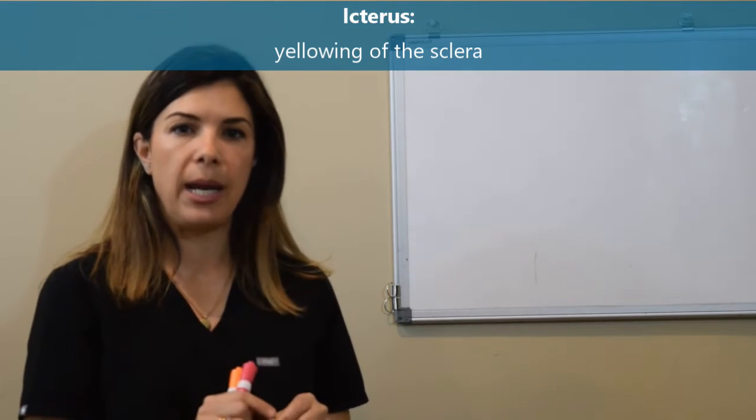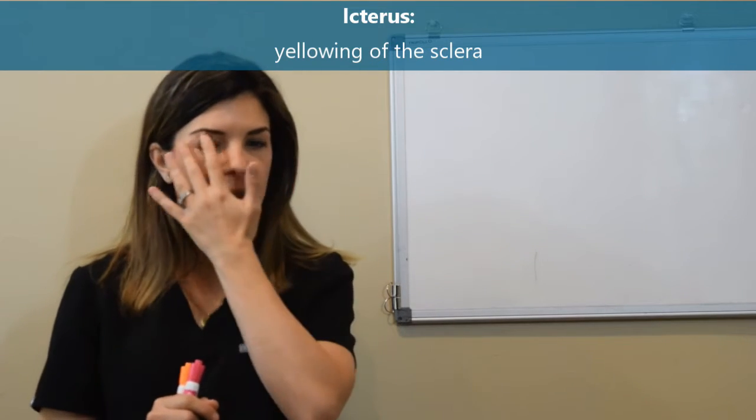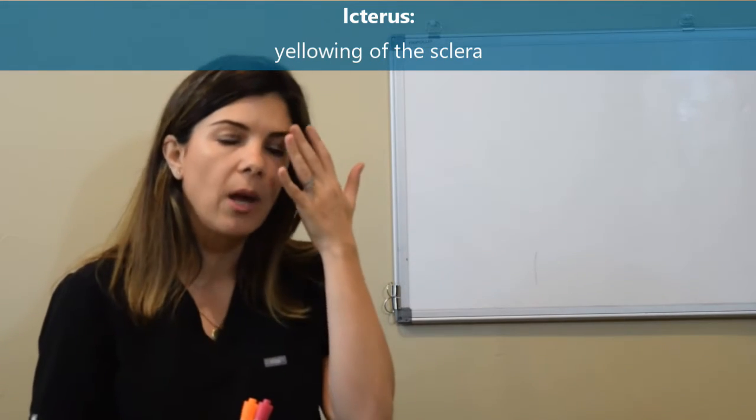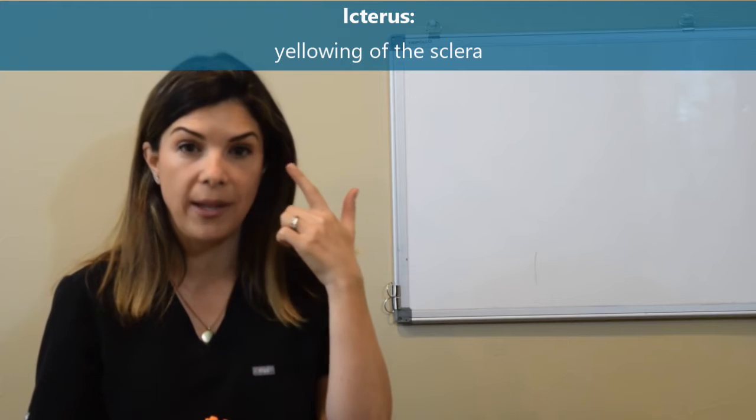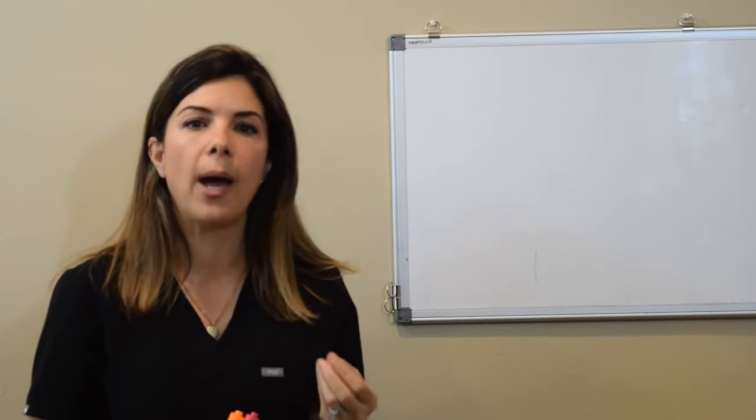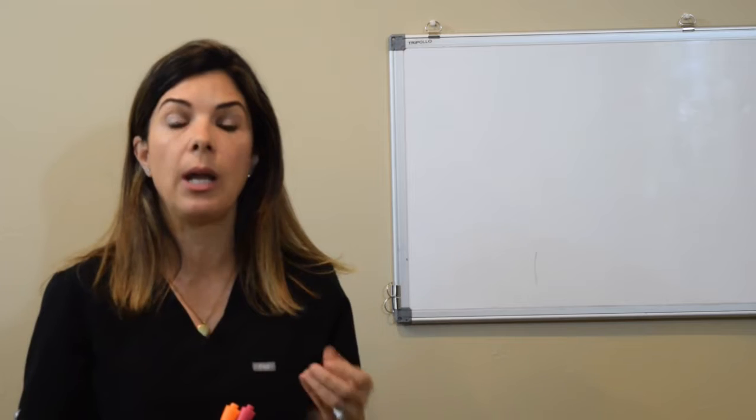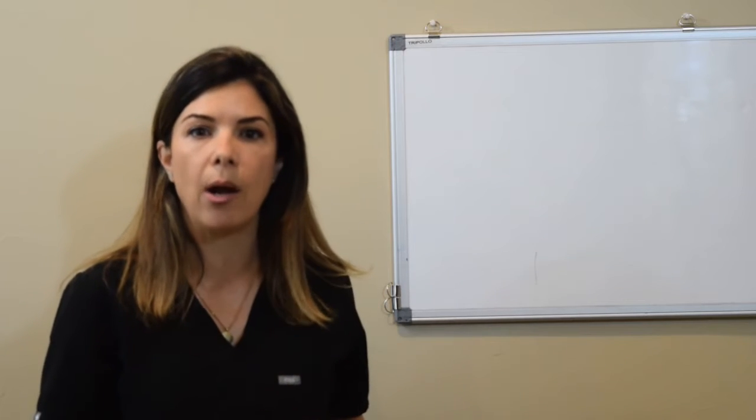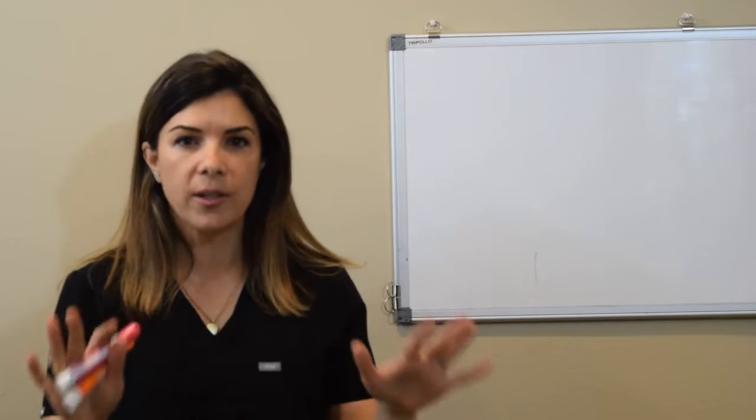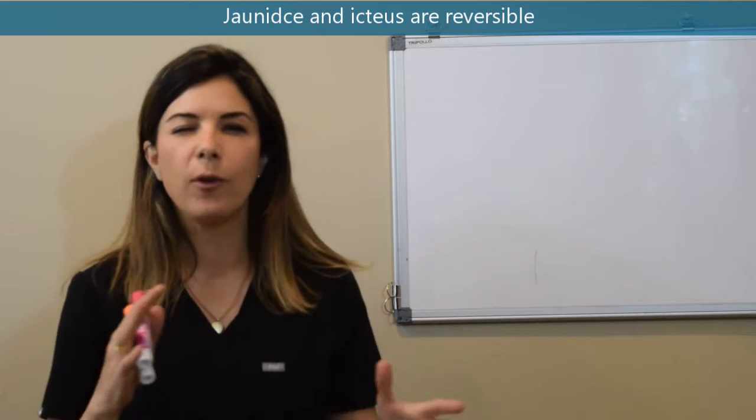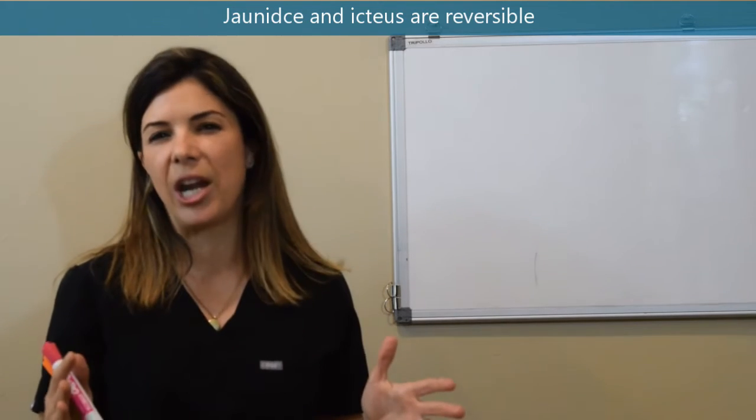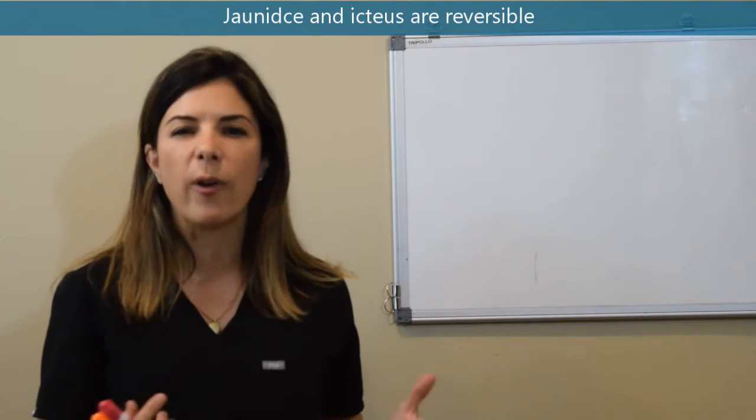Icterus specifically means that you have yellowing of the sclera so the white parts of your eye. Normally they should be white and if you do have enough of the bilirubin pigment deposition then you will end up with yellowing of the eyeball. Just understand those terms, we use them all very interchangeably because really we're referring to the same thing.